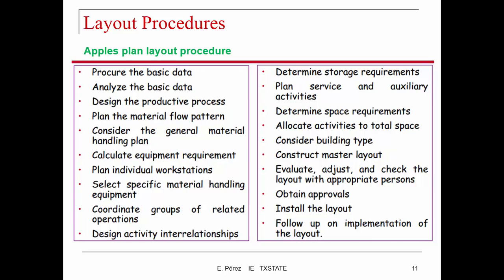I want to show that different companies consider different things when planning for layouts. For Apple, there's a lot of information in their procedure. At the beginning, they're collecting data regarding the type of product that is going to be placed in the facility. Then they start to consider the material flow pattern, material handling, the type of equipment required, the number of working stations, and so on.